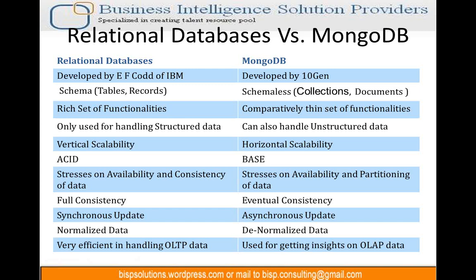A key difference between RDBMS and MongoDB: the basic principle on which RDBMS works is ACID — Atomicity, Consistency, Isolation, and Durability. Whereas MongoDB uses BASE — Basically Available, Soft state, Eventual consistency.